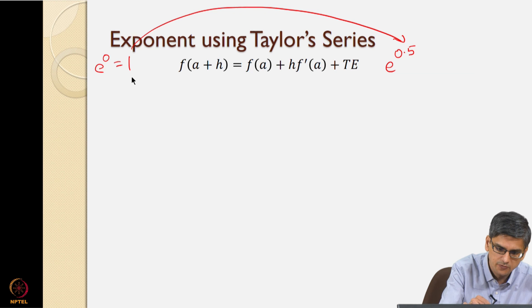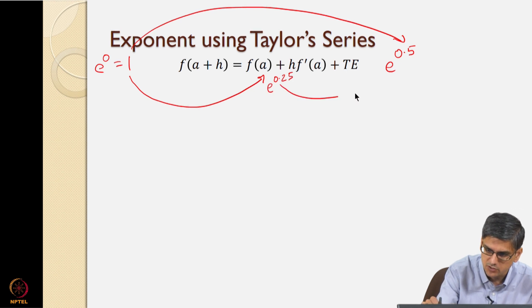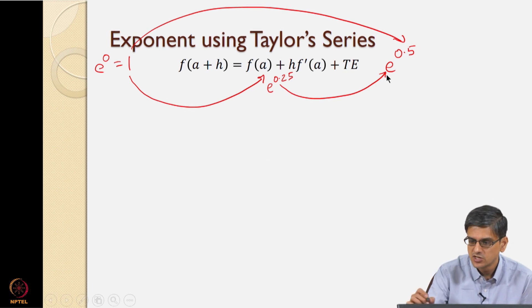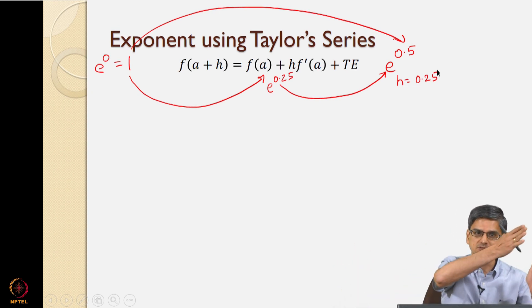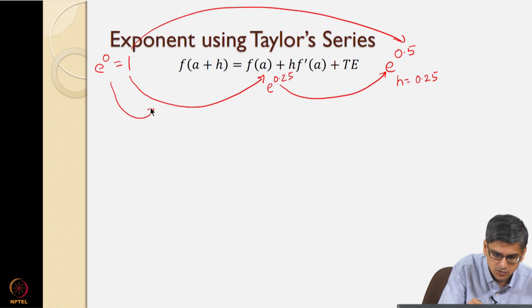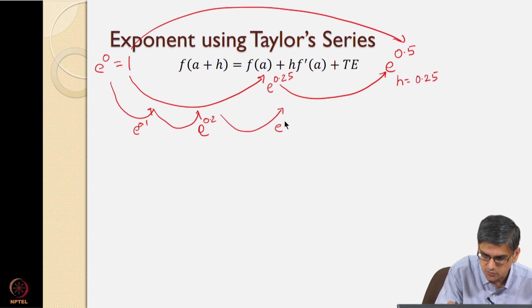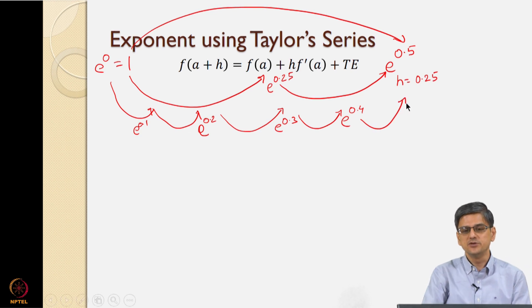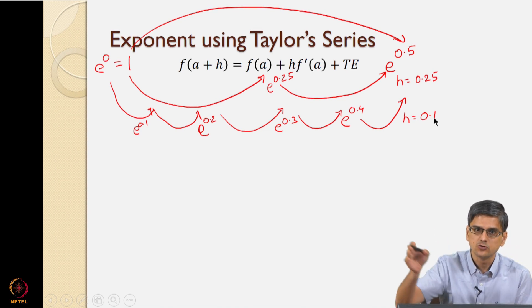That means we can use Taylor series to go from e to the power 0, compute e to the power 0.25, and from e to the power 0.25 compute e to the power 0.5. So here the step size h is 0.25 — we are going from 0 to 0.5 in 2 steps: 0 to 0.25, then 0.25 to 0.5. Alternatively, we can go in 5 steps of 0.1, going from e to the power 0 to 0.1, 0.1 to 0.2, 0.2 to 0.3, 0.3 to 0.4, and 0.4 to 0.5.